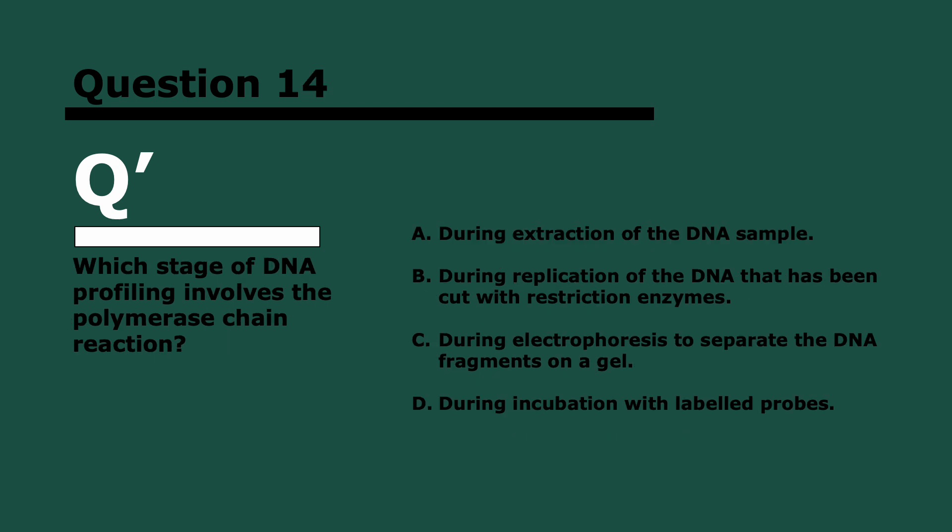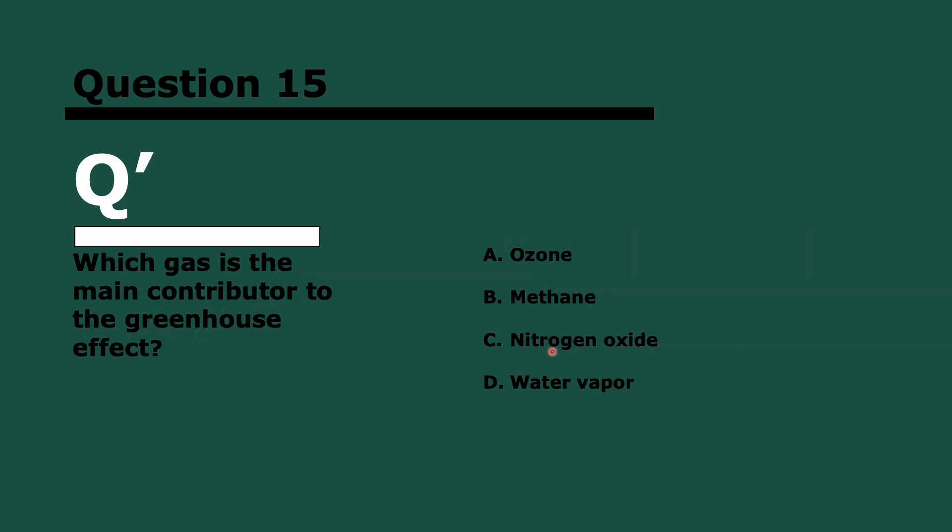Question 14. Which stage of DNA profiling involves the polymerase chain reaction? Three, two, and one. B. It's not for extracting the DNA sample. Remember, the PCR is to replicate DNA many times to get a lot more quantity. It's not to separate the fragments, that's gel electrophoresis. And it's not during incubation with labeled probes. The PCR is actually replicating it.